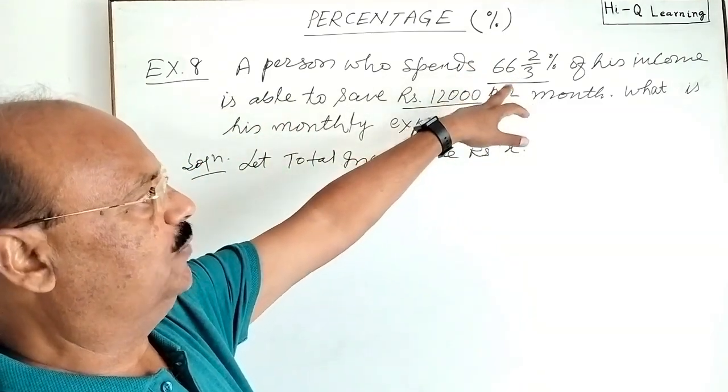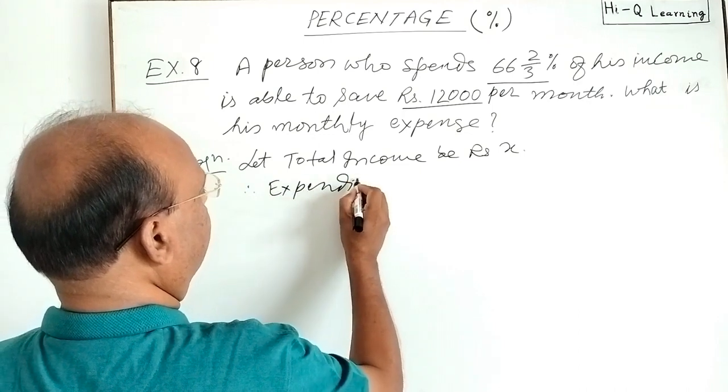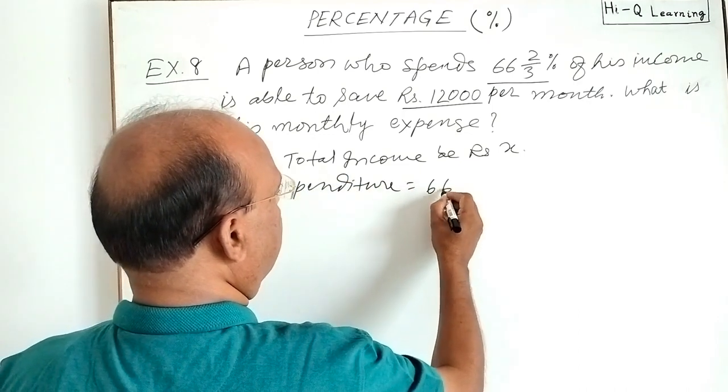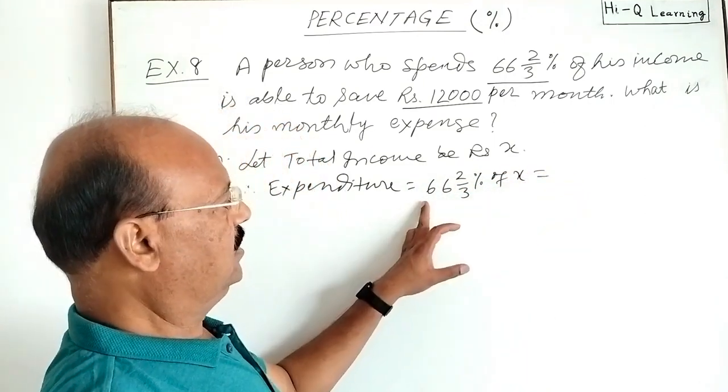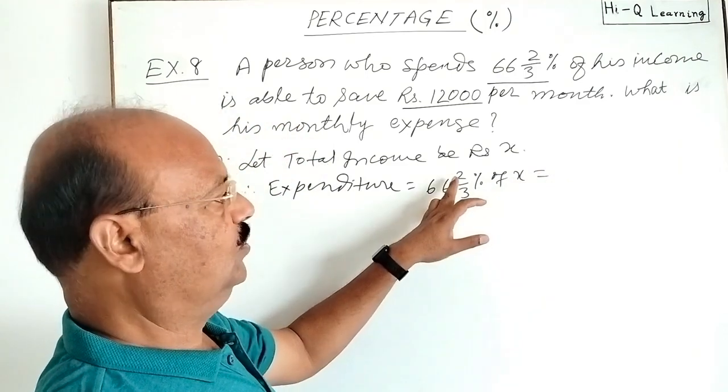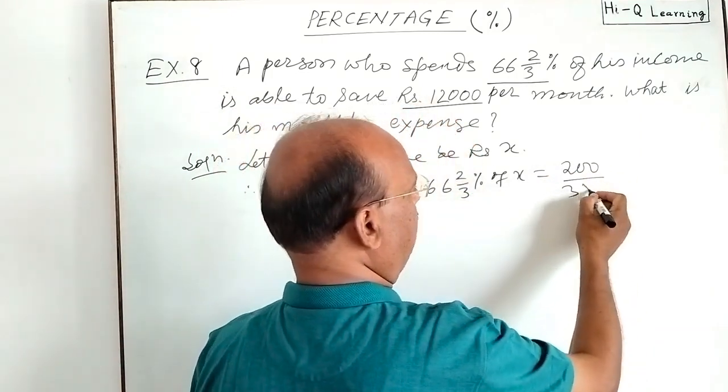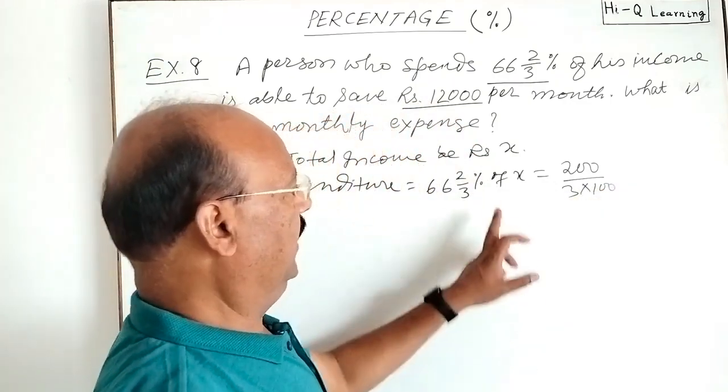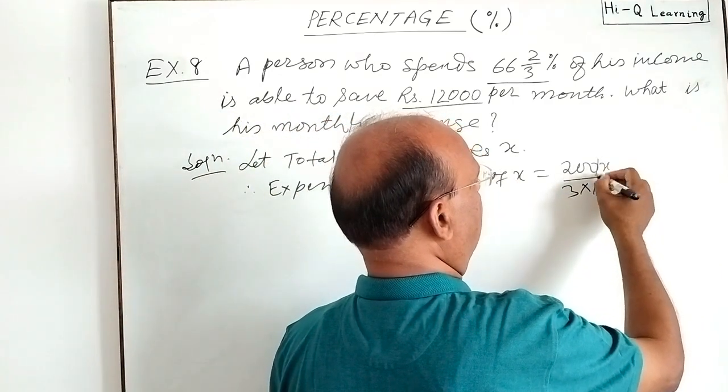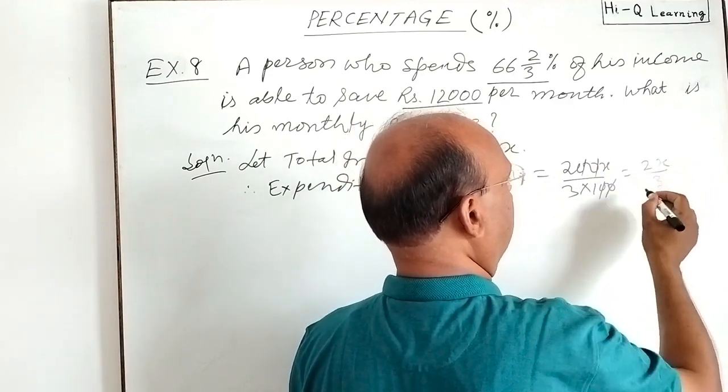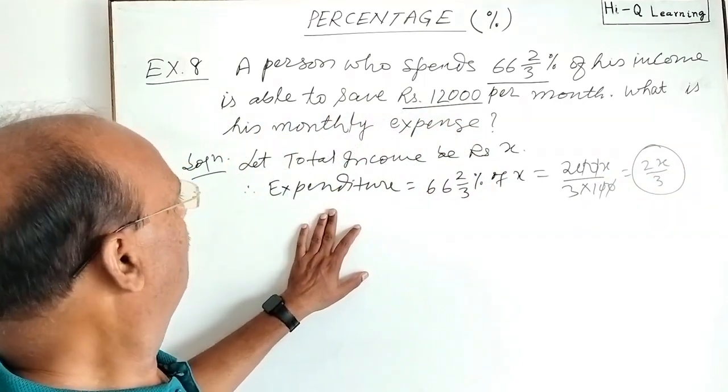Expenditure is 66 and 2 by 3 percent, so therefore expenditure is 66 and 2 by 3 percent of total income of X. Let us simplify: 66 into 3 is 198 plus 2 equals 200, 200 divided by 3, and due to this percent we'll write here 100 in denominator, and of means multiplication. X is here, these two zeros will be cancelled out, so this is equal to 2X by 3.